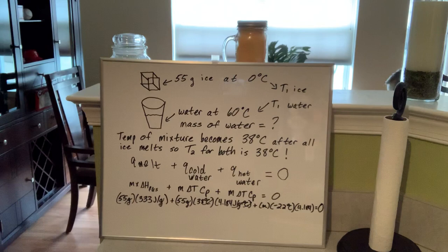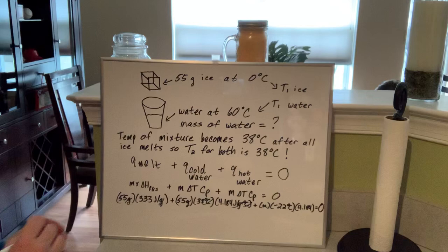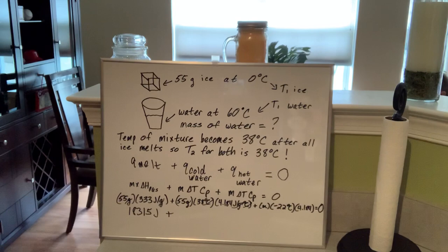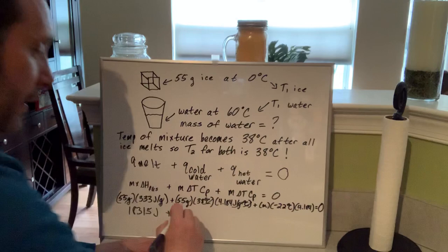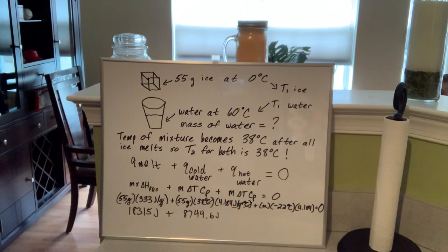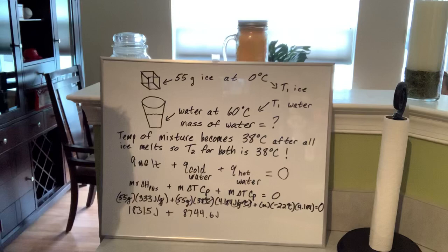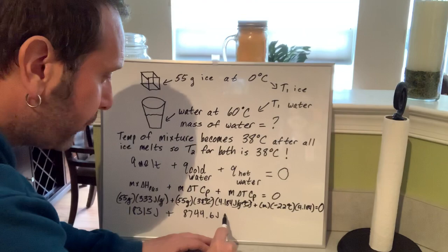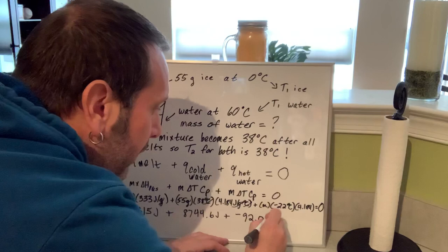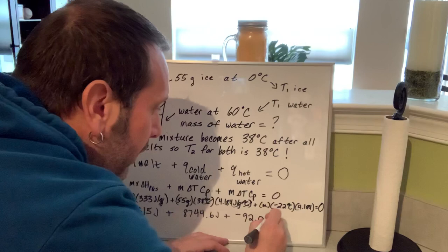So: 55 times 333 gives us 18,315 joules. Then for the cold water, 55 times 38 times 4.184 gives 8,744.6 joules. Then negative 22 times 4.184 times m gives negative 92.05 joules per gram times m. The Celsius units cancel, so it ends up being joules per gram times m. The whole equation equals zero.